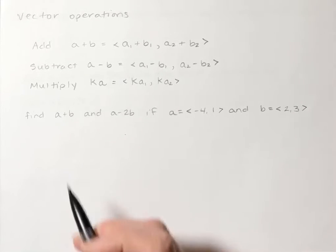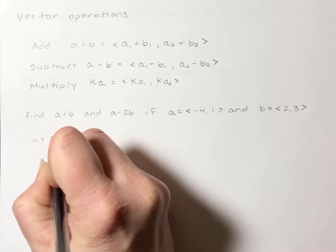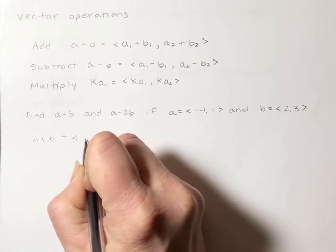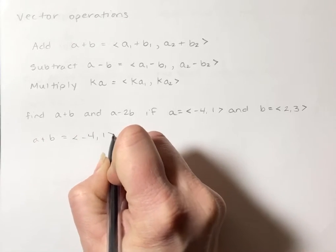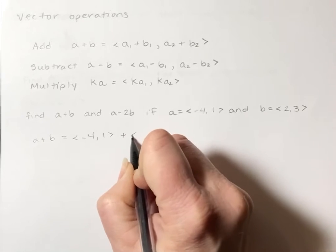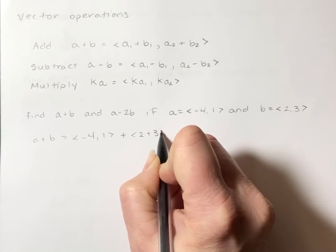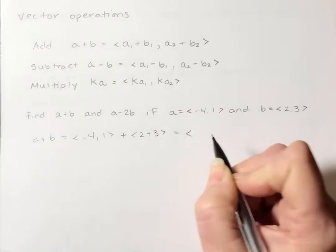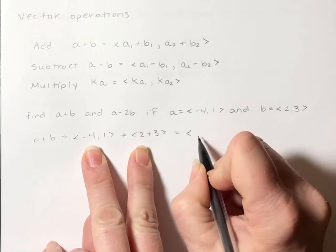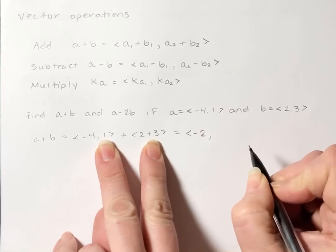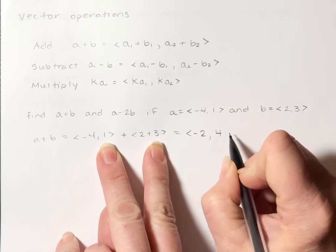So if I want to find A plus B I'm literally just going to take the vector <-4, 1> and add it to the vector <2, 3> and I'm gonna add my X's: negative 4 and 2 is negative 2, and add my Y's: 1 and 3 is 4.